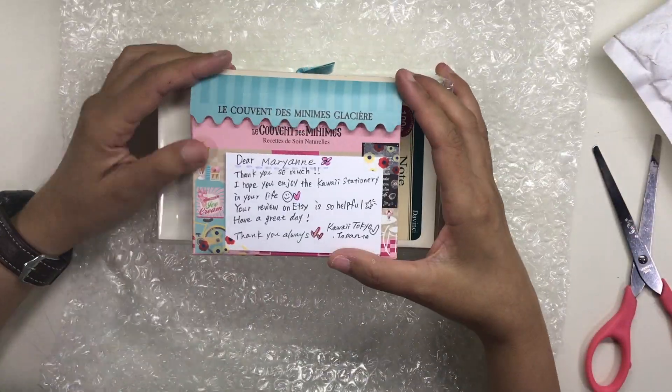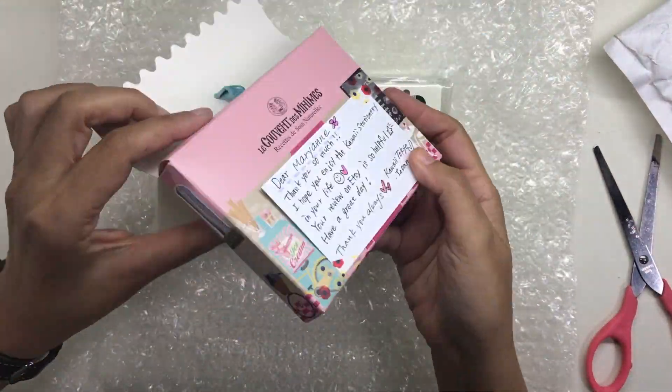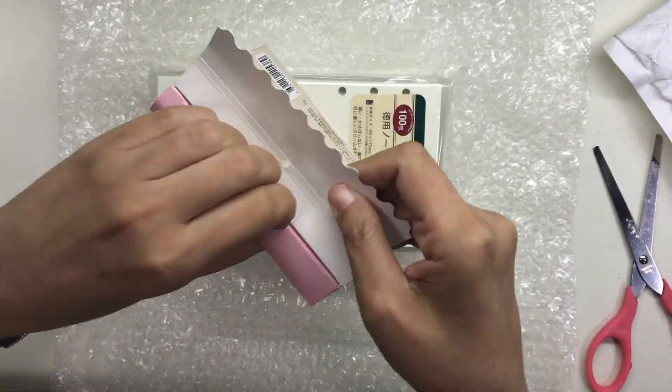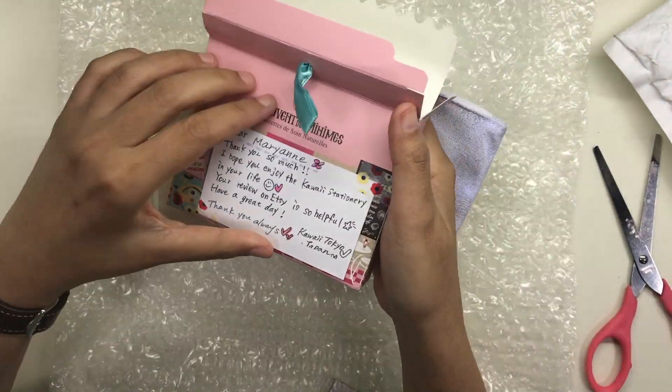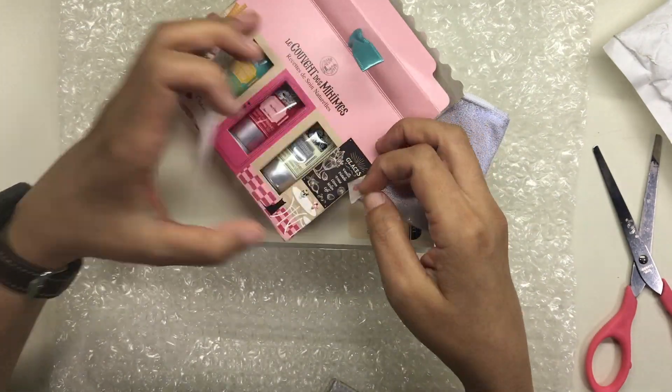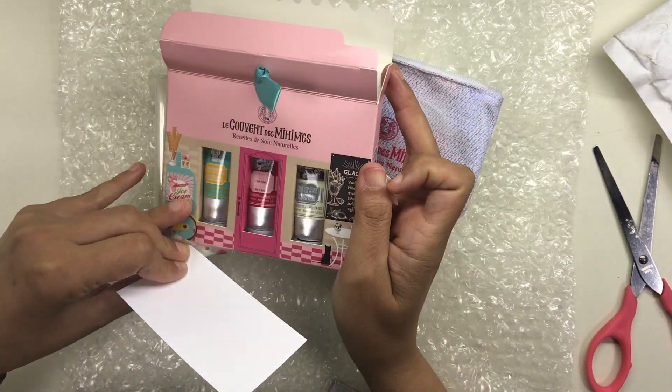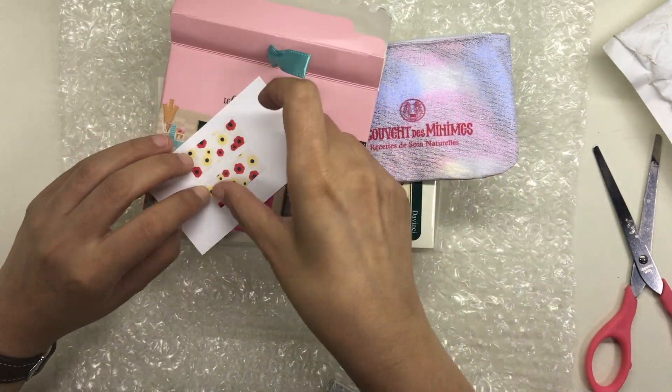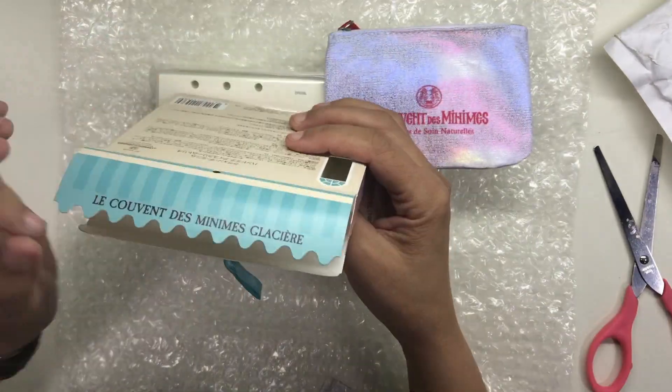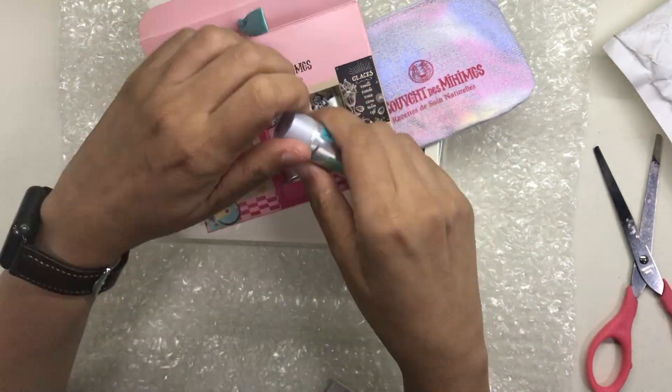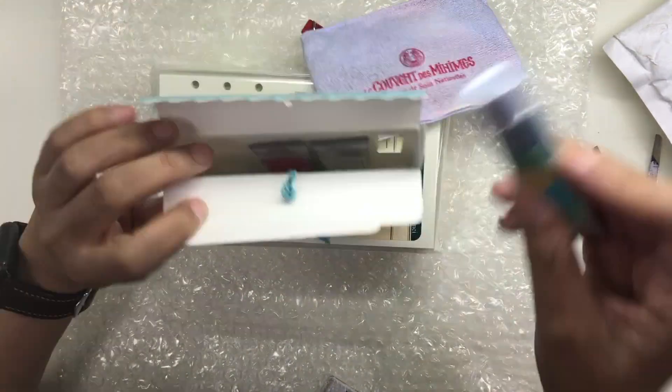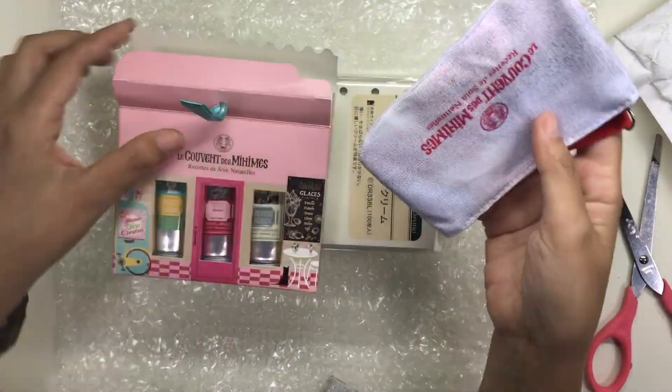Kauai Tokyo was also nice enough to include this wonderful little gift with my order plus a handwritten note and these are really adorable. These are very small tubes of hand cream in different fragrances and they look so cute and it even has a little pouch. I will definitely use these.